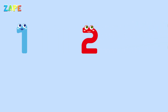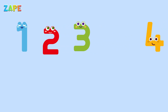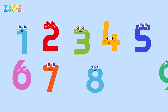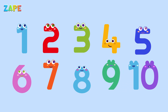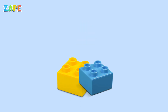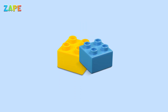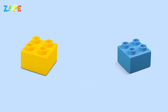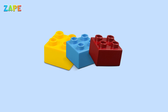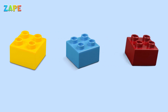Now let's sort some numbers. Look at these numbers from one to ten. Let's see which ones are even and which ones are odd. Let's begin with number two. Can we split it into two equal parts? Yes — one and one, that's even. Next is number three: one part for each, but one is left out. That's odd.